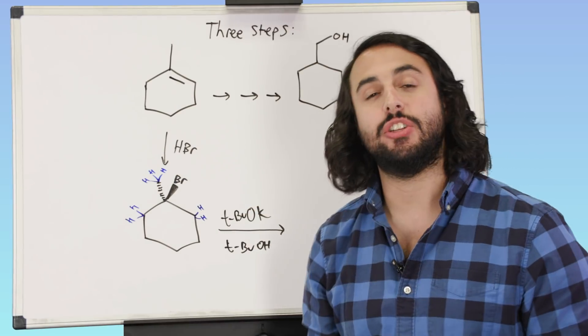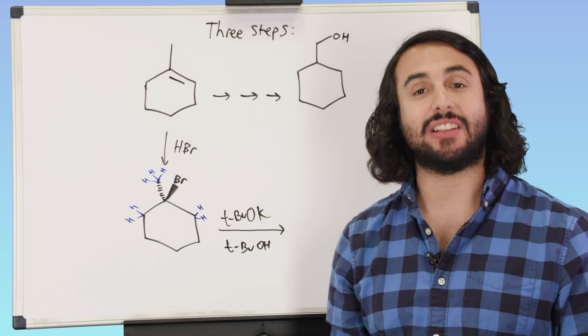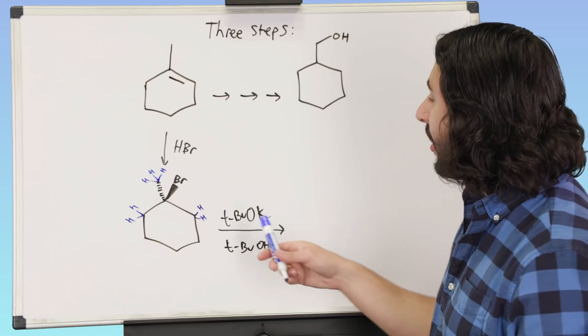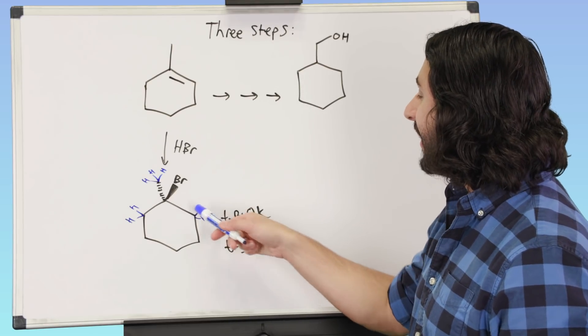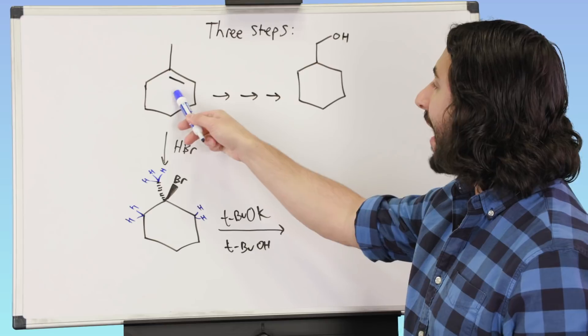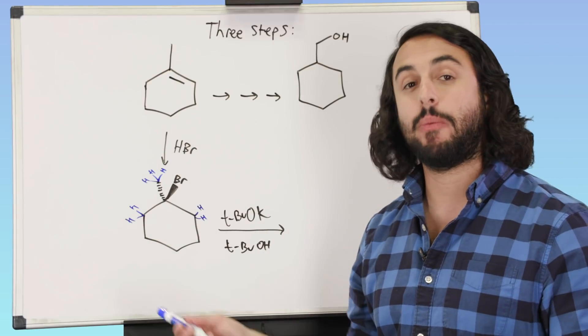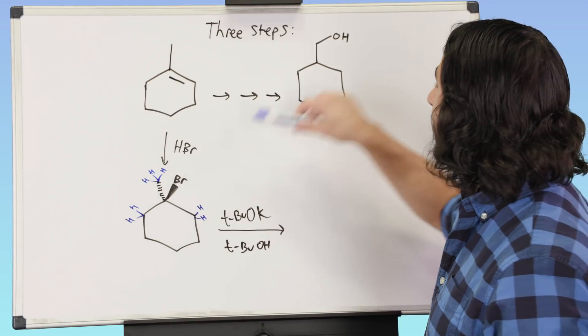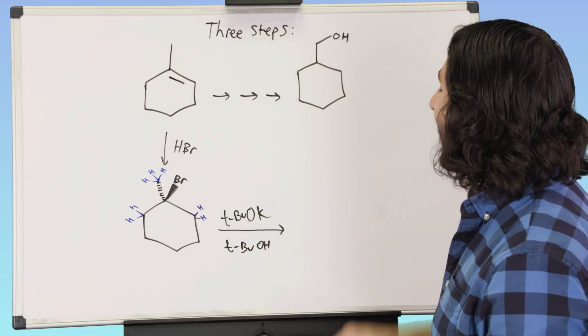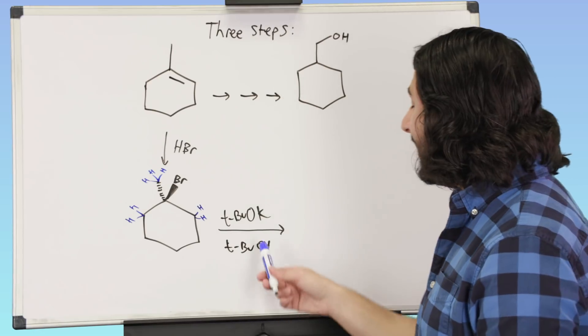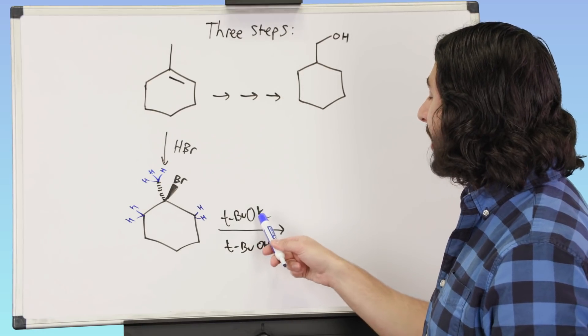Not thermodynamically controlled, because a small base is going to get one of these guys and just go back to where we started, and that's not where we want the pi bond. We want the pi bond up here so that we can do some addition and get that hydroxyl there. So we're going to need a big bulky base like tert-butoxide.